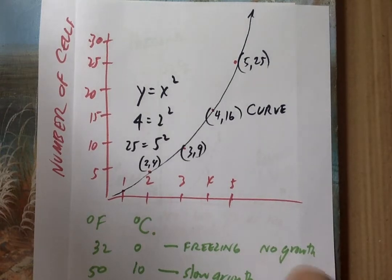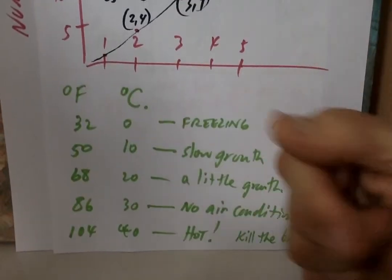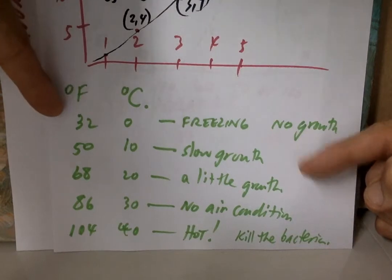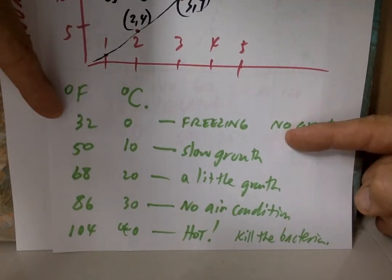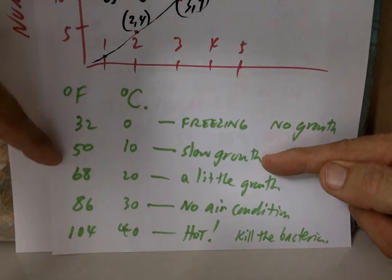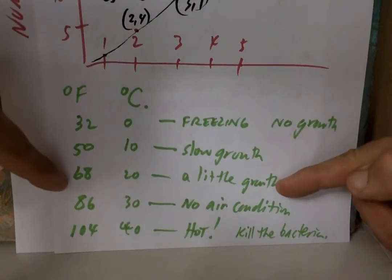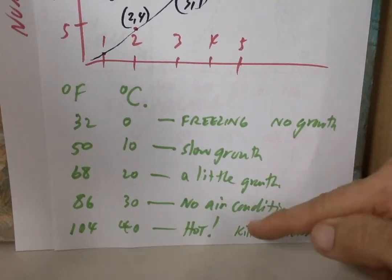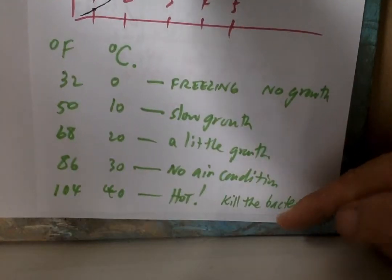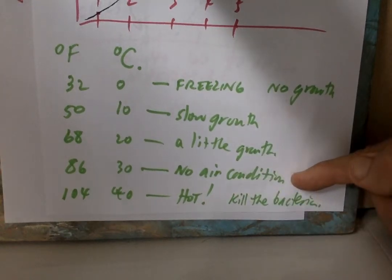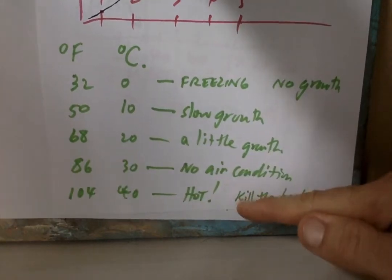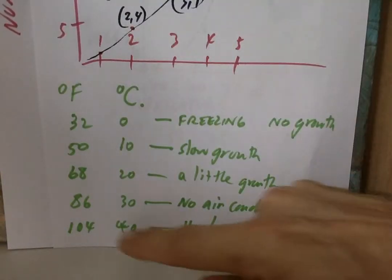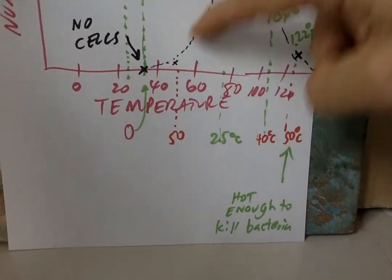Now, the other thing to look for is the ability to convert. If something's freezing or 32 degrees Fahrenheit, there's no growth, right? But there might be slow growth at 50 degrees, a little more growth at 68, that's when AC is on. But if the AC is off and there's no air conditioning, oh my, you're going to have some real good growth going on. And then if it gets too hot, it starts killing the bacteria.